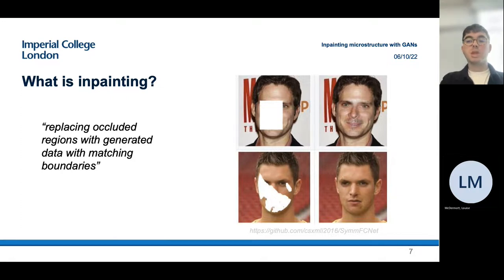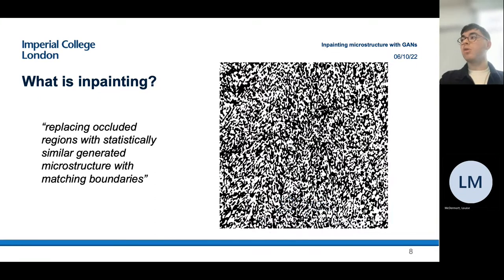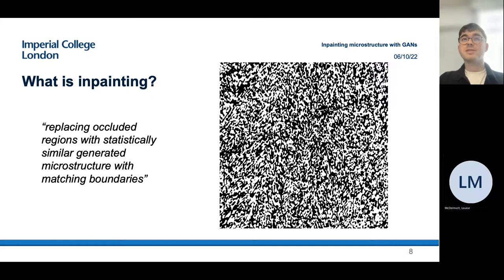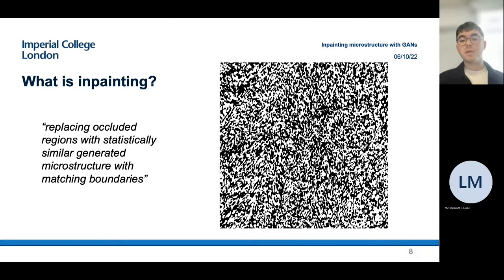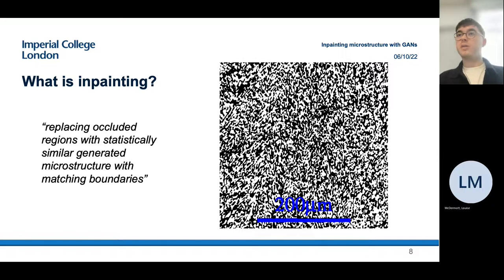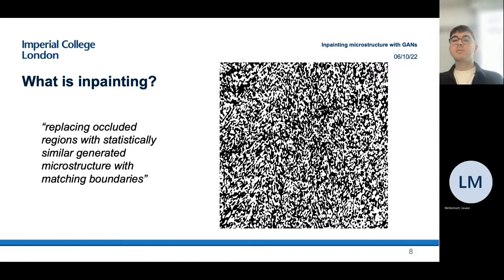More specifically for microstructure, we're replacing the occluded regions with statistically similar generated microstructure with matching boundaries. It's important to note this is a stochastic method — we are not trying to recreate exactly what is underneath the mask, because we don't know what it is. We're trying to replace it with microstructure that is statistically indistinguishable from the rest of the image, and there are many statistically equivalent ways of inpainting the same region.